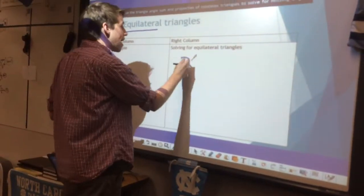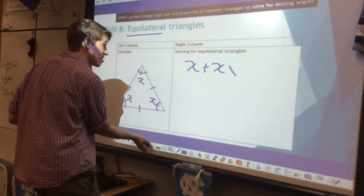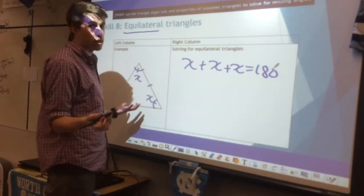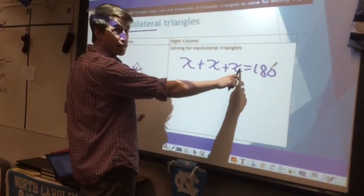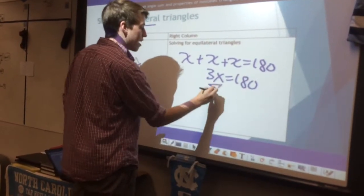So now I see I have x plus x plus, oh wow, that got a little crazy guys, plus x equals 180. And now we can still solve. x x x is 3x equals 180. We'll divide it by 3.